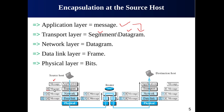The transport layer then passes the packet to the network layer, which is the third layer. The network layer takes the transport layer packet as its payload and adds its own header, represented by the number three. This header contains the addresses of the source and destination hosts — whereas the transport layer identified processes, the network layer identifies the systems that want to communicate.